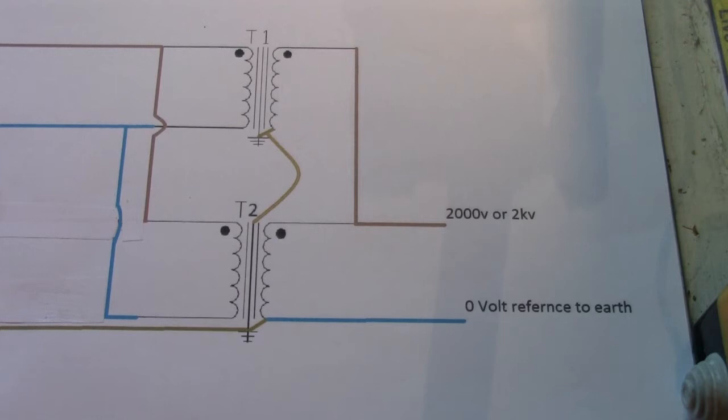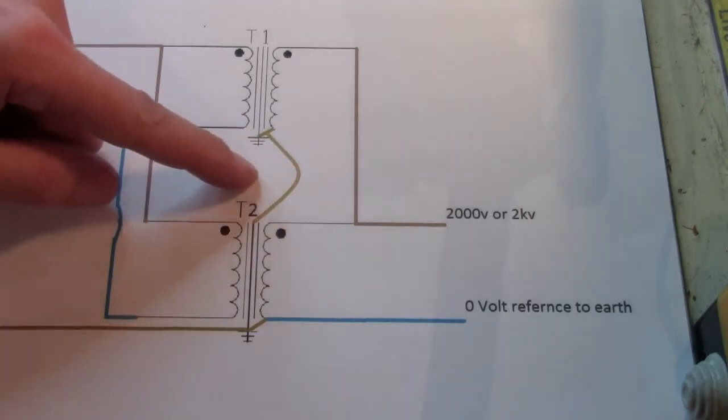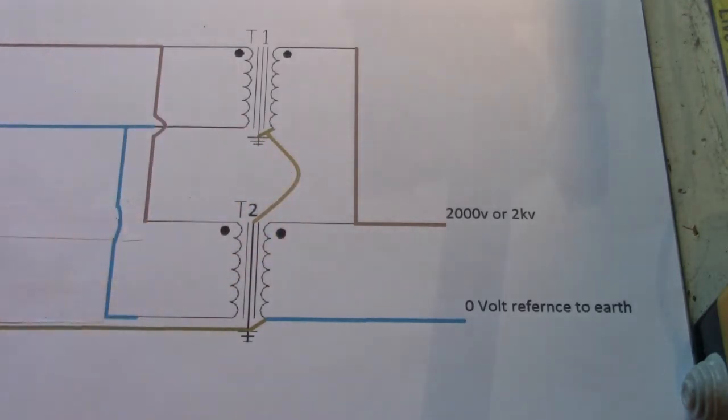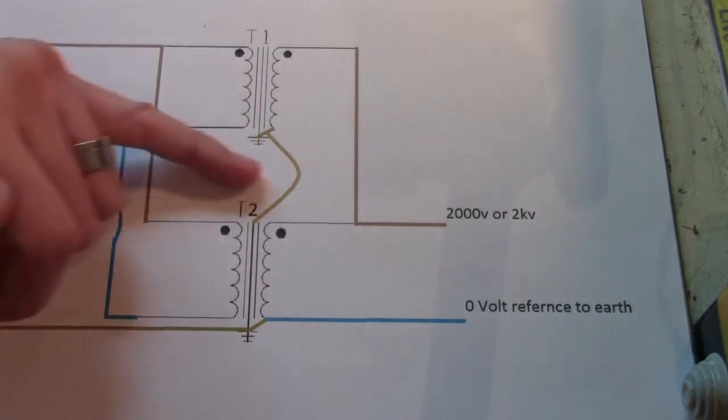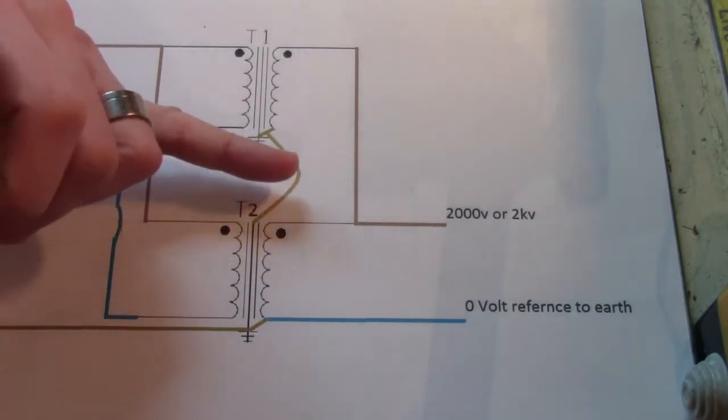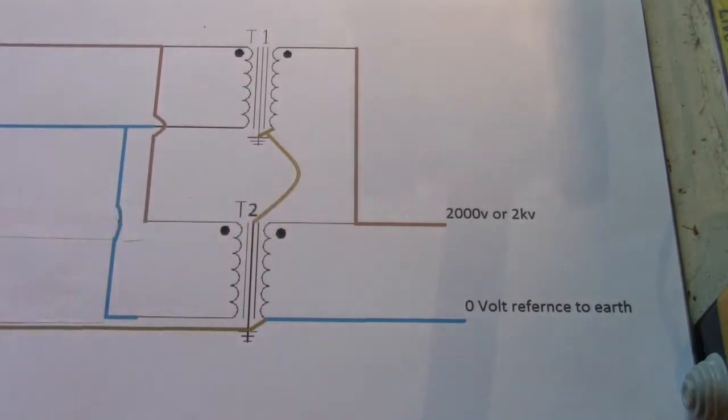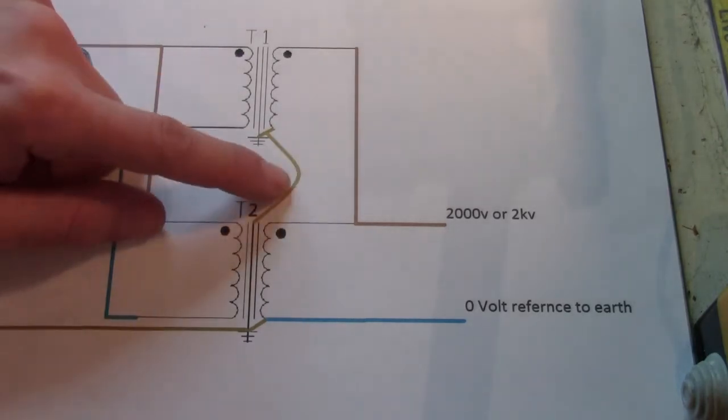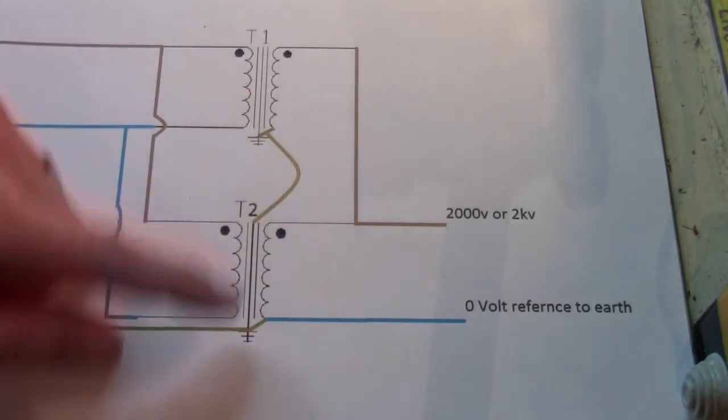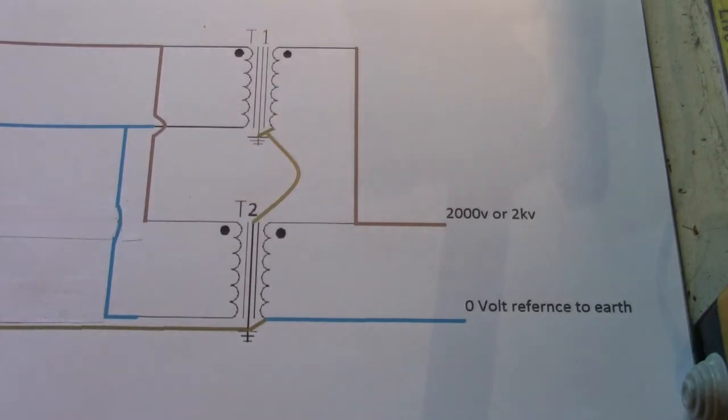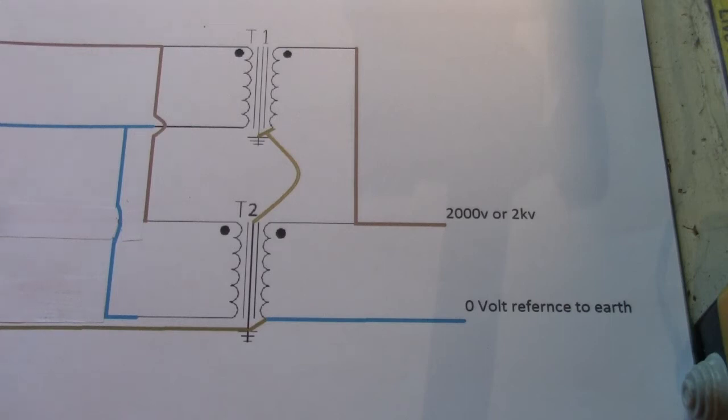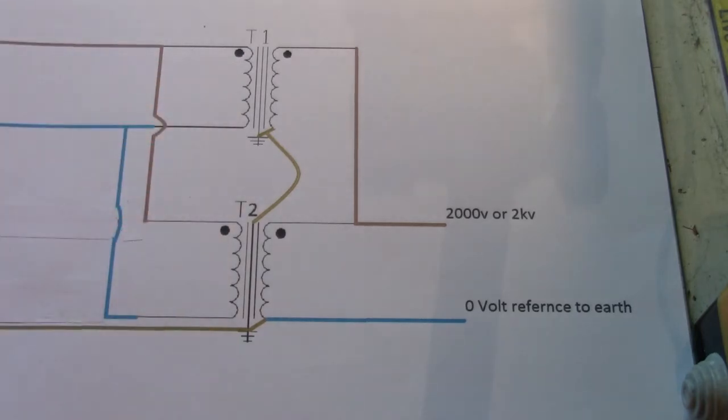Now, a lot of people, if they were going to draw it, would probably draw the Earth lead coming in here. So it makes it more, you can see more what is called a center tapped transformer. Because the tap is sort of in the center of the two secondary windings. So our aim is to get 2000 volts at 1400 watts. Again, assuming these are 700 watt MOTs.